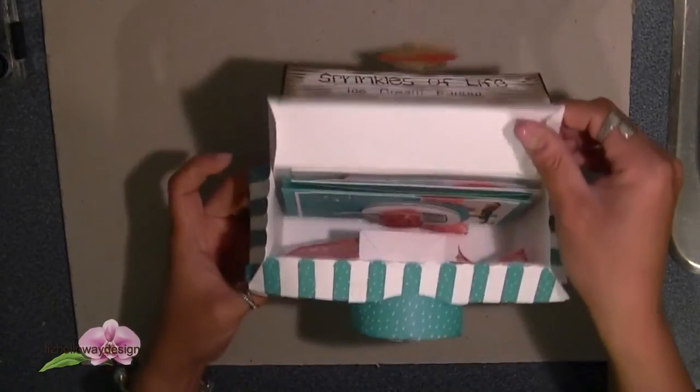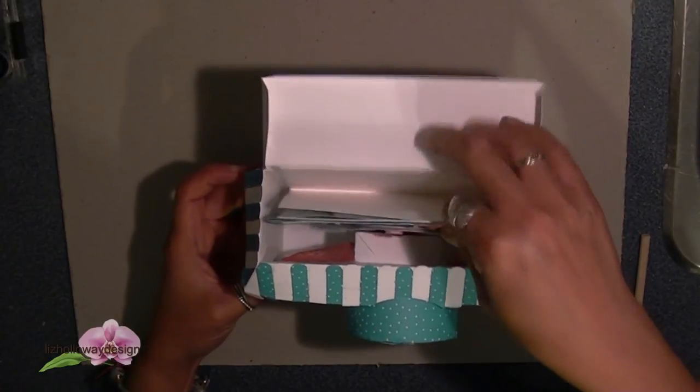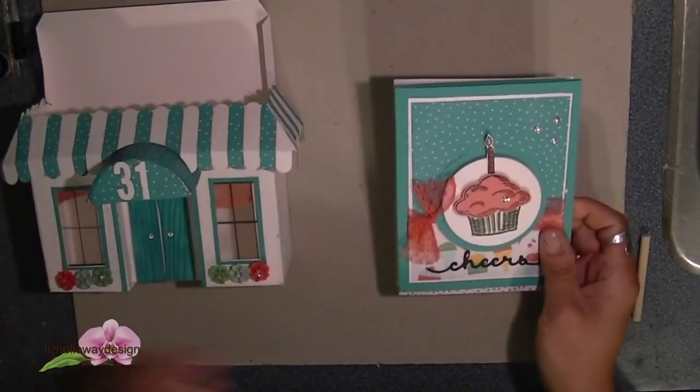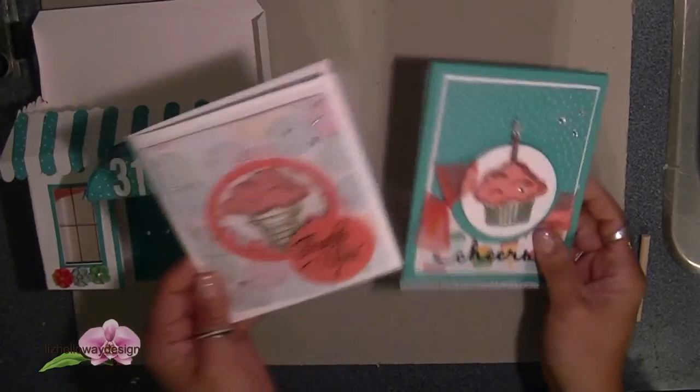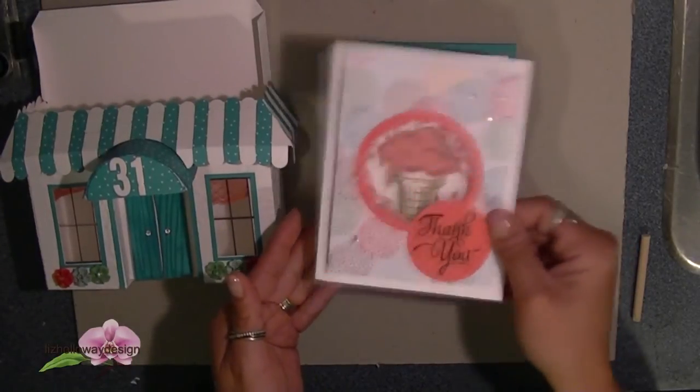Use the sprinkles of life to create the ice cream on top and add a crystal effect on the cherry. The ice cream cone acts like a lever to open the top and inside you can add a gift card and coordinating cards. Here I have three cards using the sprinkles of life stamp set. One is a shaker card and two others are just clean and easy cards.